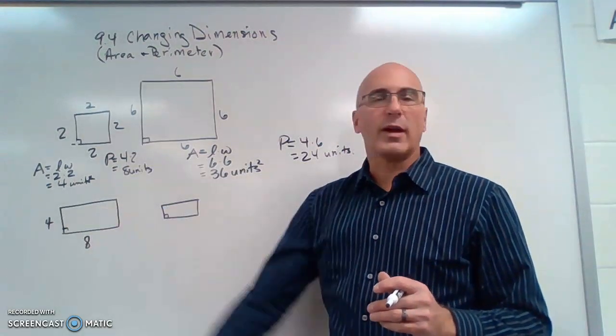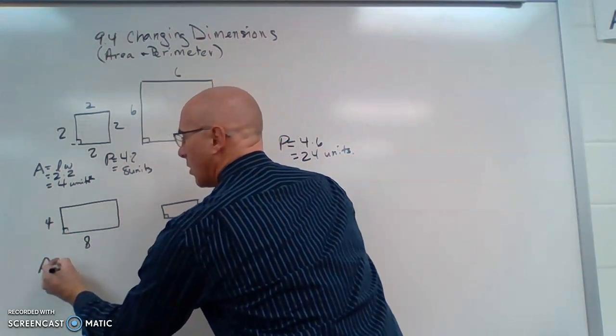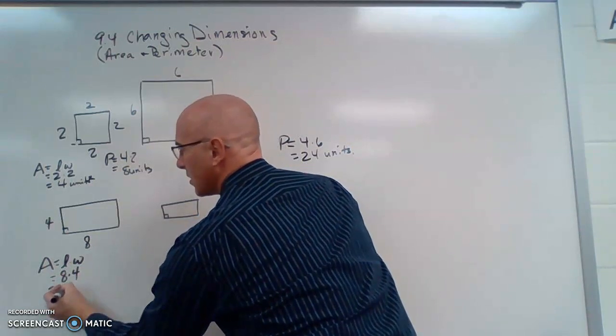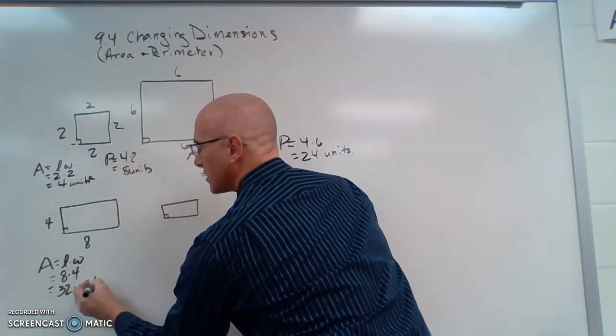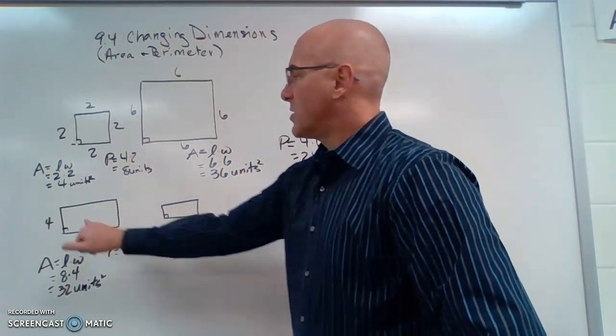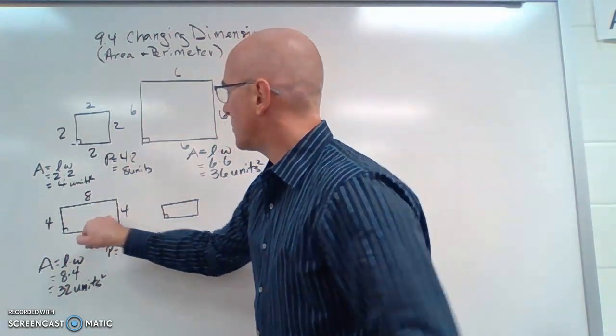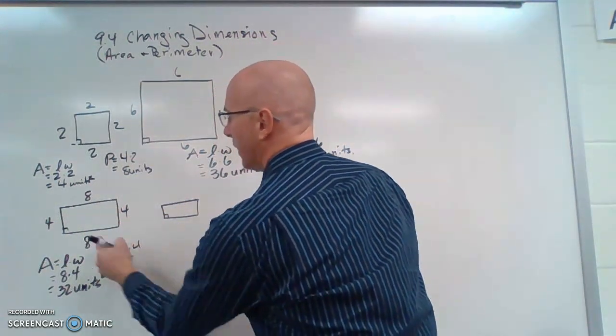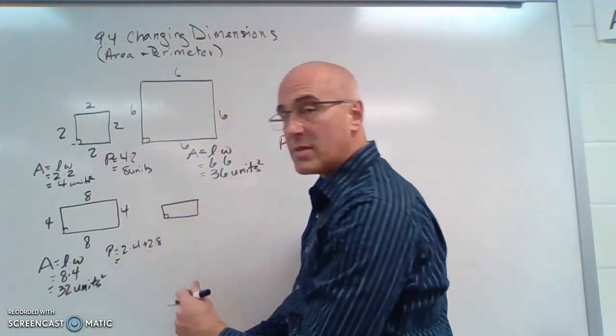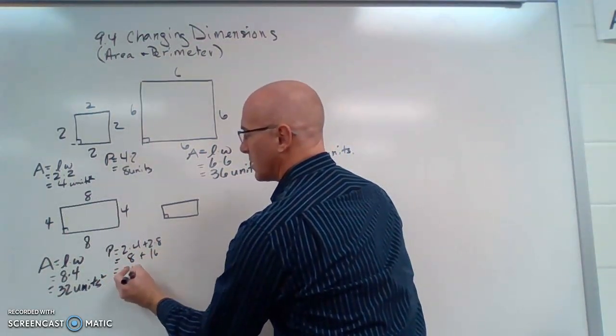I have a rectangle here. It's a 4 by 8 rectangle. We know that the area is length times the width, so 8 times 4, which is 32 square units. Let's look at the perimeter. The distance around, so it's 2 times 4 plus 2 times 8. If I do my PEMDAS, 2 times 4 is 8, 2 times 8 is 16, so I get 24 units.